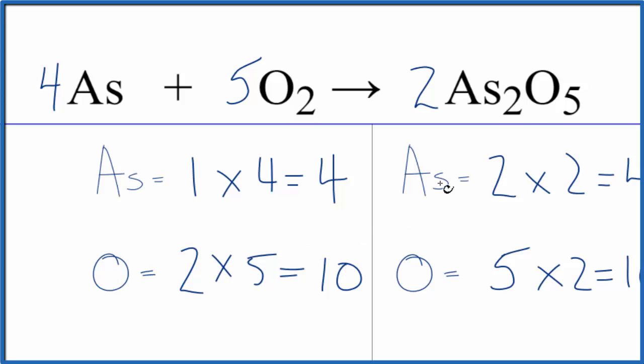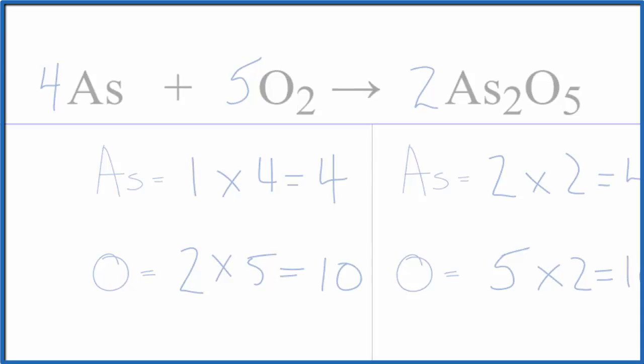So the key here is if you have an odd number of oxygens or another atom, it's often helpful to multiply by two to get that to be an even number. This is Dr. B with the balanced equation for As plus O2 yields As2O5. Thanks for watching.